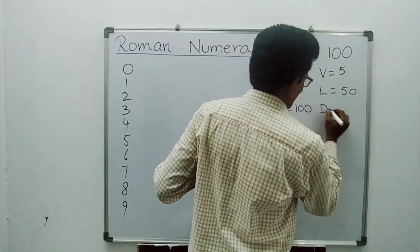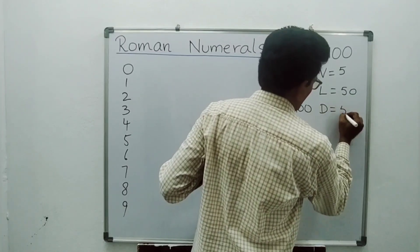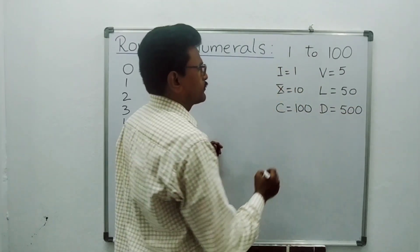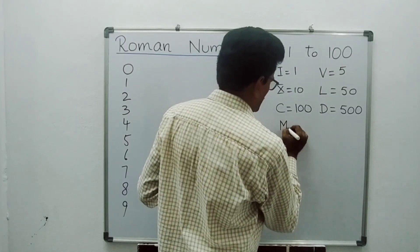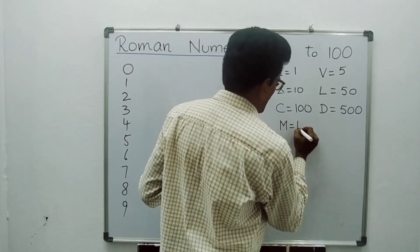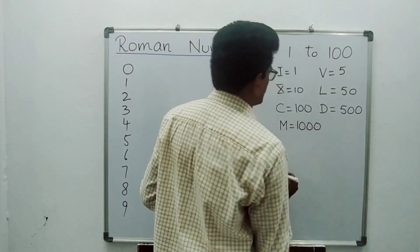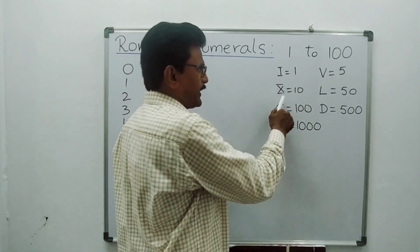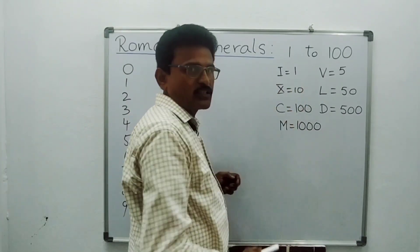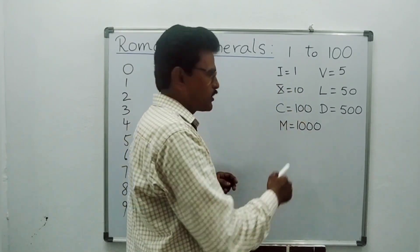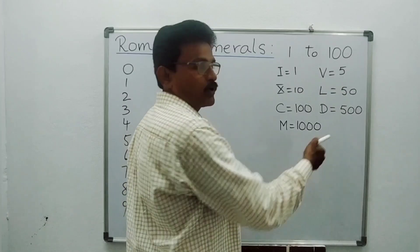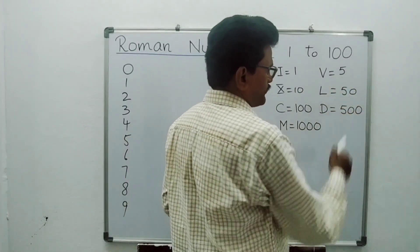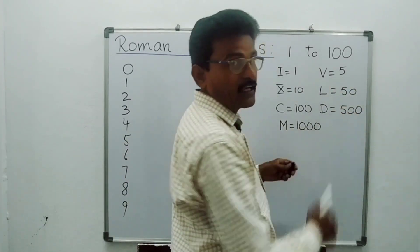D is 5 after 2 zeros — it is 500. And finally M represents 1000, which is 1 after 3 zeros. So: I means 1, X means 10, C means 100, M means 1000. V for 5, L for 50, D for 500.